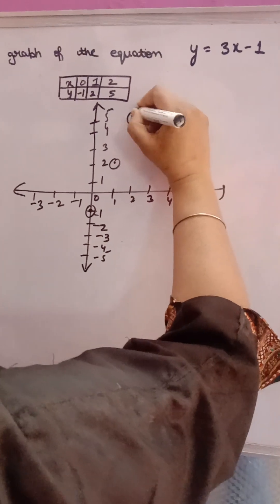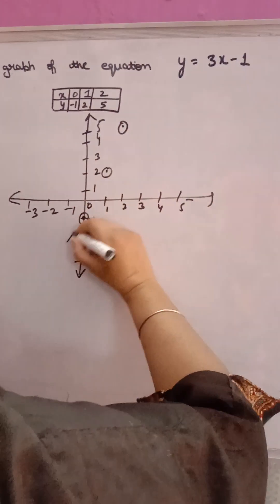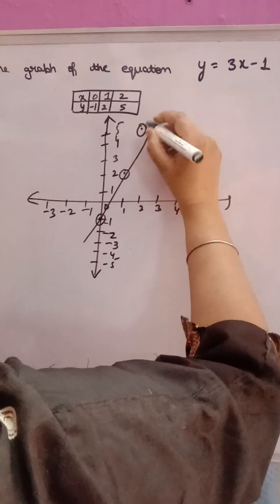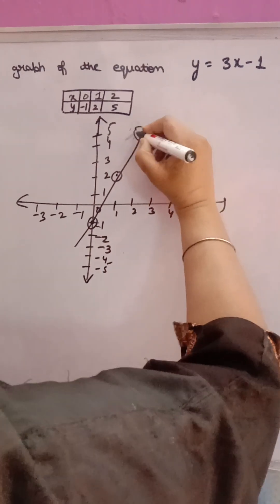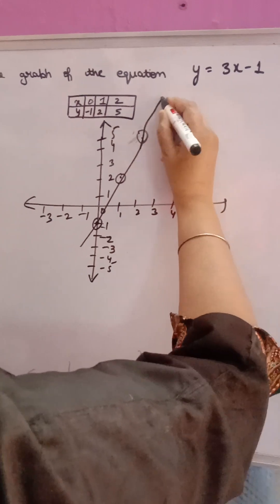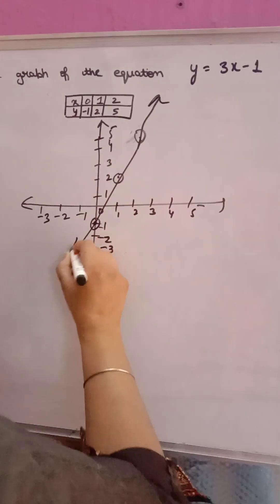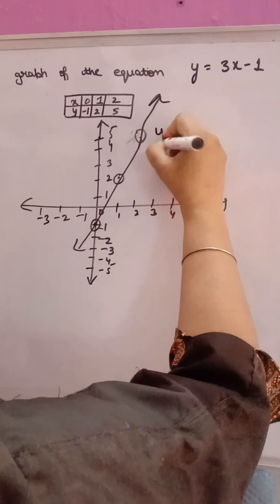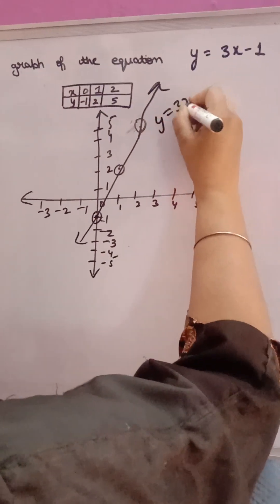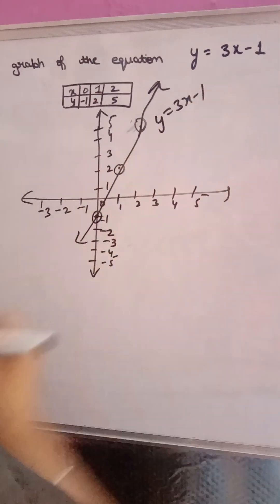One point will come here. With the help of a scale on graph paper, you have to join them, then you will get this type of graph for y is equal to 3x minus 1. Thank you.